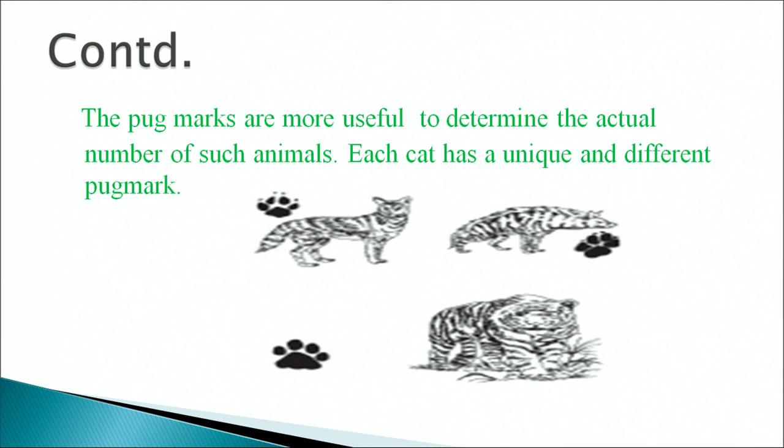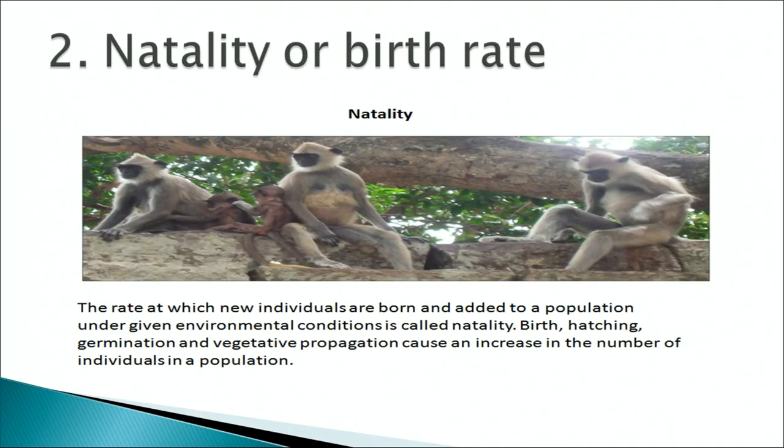Each cat has unique and different pug marks. In this slide you can see the animals and their pug marks. There are other methods for counting human populations called a census, carried out every 10 years where each individual is physically counted. Coming to natality, or birth rate. The rate at which new individuals are born and added to a population under given environmental conditions is called natality.